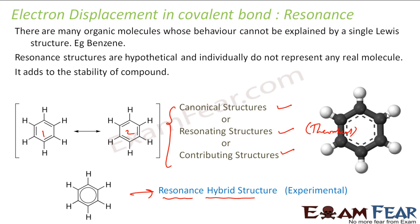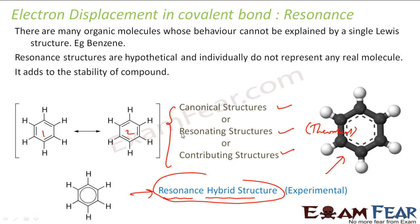The actual experimental shape of benzene is the resonance hybrid. To summarize: resonance means some compounds can have multiple Lewis structures, and none of these Lewis structures alone can explain the properties of the compound. These are called canonical, resonating, or contributing structures. The real structure is the resonance hybrid structure, and the more resonating structures a compound has, the more stable it is.